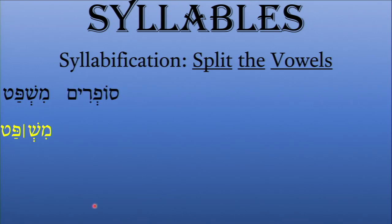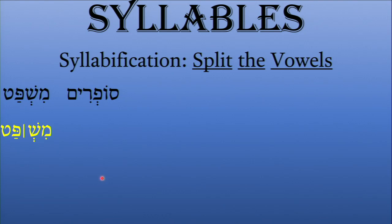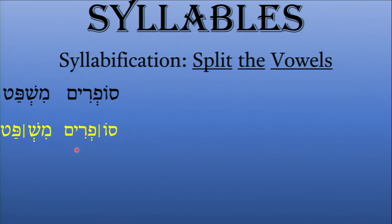For 'sofrim': I see a Shva. I look at the vowel before it and see it's a long vowel, so this is a vocal Shva — I make the separation before the Shva. The first syllable is 'so,' and then 'frim' is the second syllable. The Pe with the vocal Shva is attached to the rest of the word: Pe, Resh, Yod, and Mem.